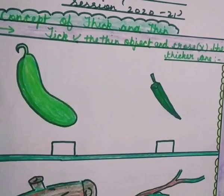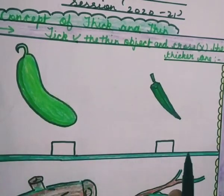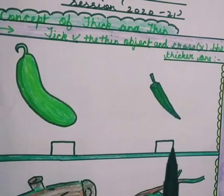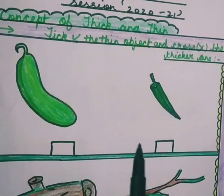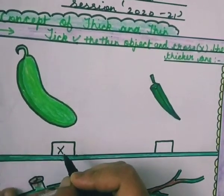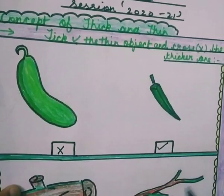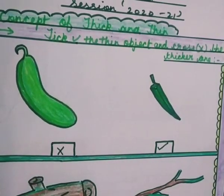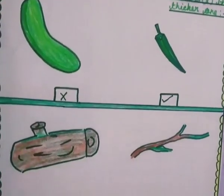In the first example, here is a bottle gourd and a lady finger. We will compare them and find that bottle gourd is thicker than lady finger. So we will cross the thick object like this, and we will take the thin object like this. I hope the first example is clear to you.